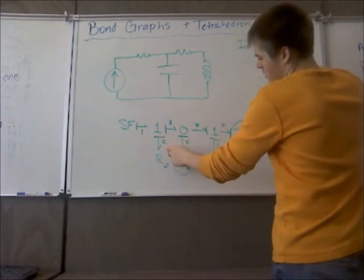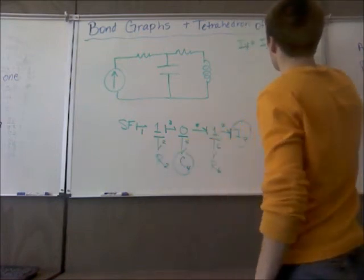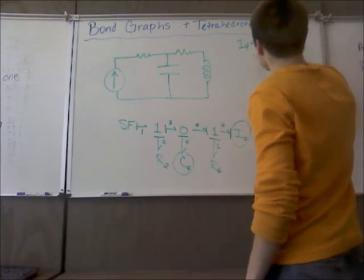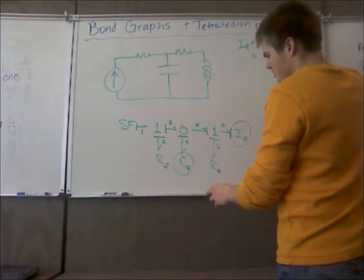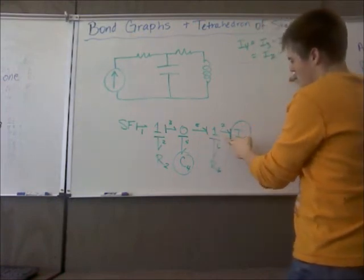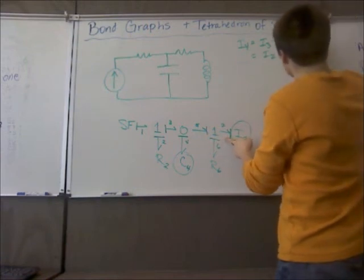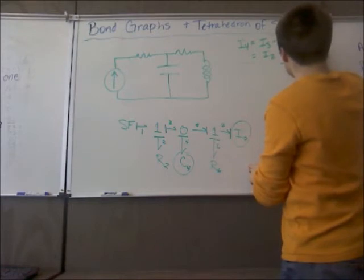So we've got I3 minus I5 and I3 equals I1 equals I2 because we've got common flow here which means they're all going to be the same. So if I were to put I2 over here we've got I5 which equals I6 or I7 because of the common flow, because of the one junction. We know I7 equals P7 over L.